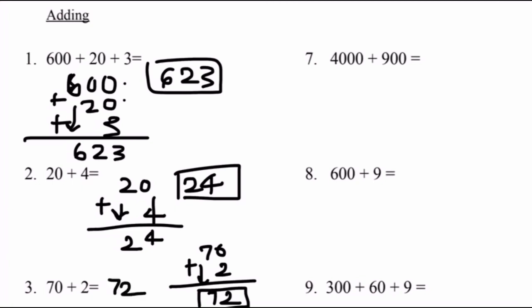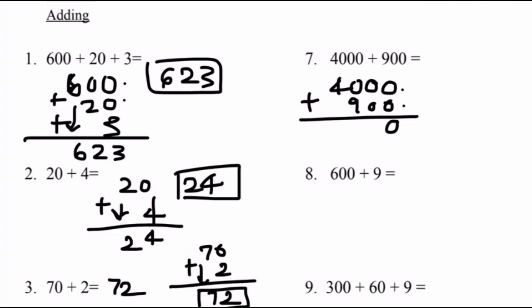Number seven: 4000 plus 900. Let's align the numbers vertically so it's easy for us to solve. 0 plus 0 equals 0. 0 plus 0 equals 0. 0 plus 9 equals 9. We bring down to 4. 4,900 is the total of 4,000 plus 900.